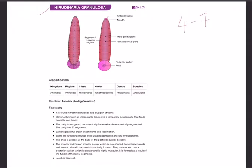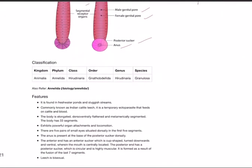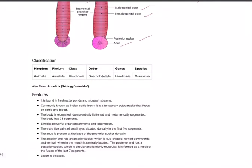Draw the diagram, label it with anterior sucker, mouth, male genital pore, female genital pore, posterior sucker, anus, and segmental receptor organs. Then write the classification: Kingdom Animalia, Phylum Annelida, Class Hirudinaria, Order Gnathobdellida, Genus Hirudinaria, Species granulosa.